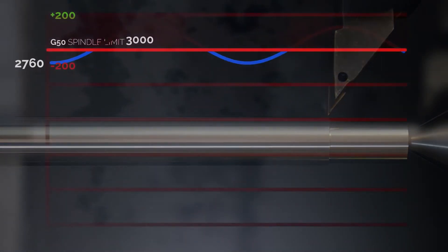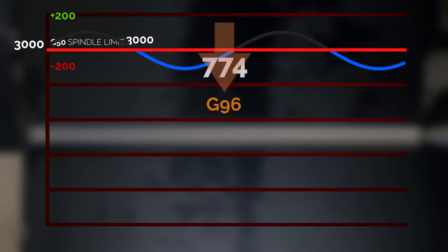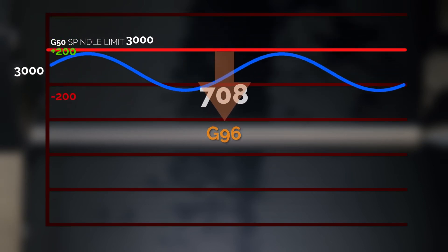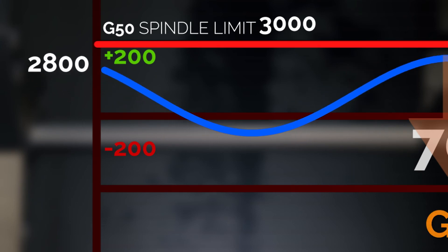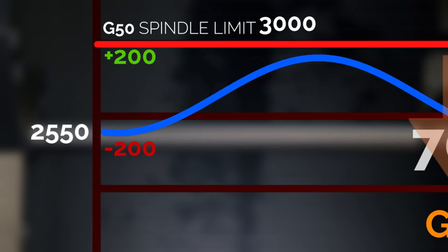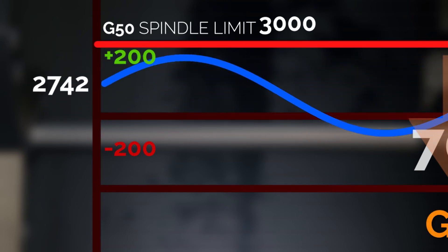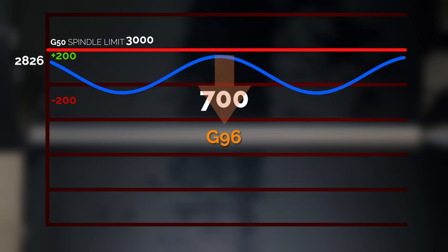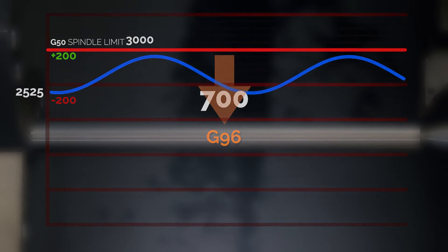On our chart, you can see the G96 range drops down, and now our peak RPM with SSV is 2900 RPM. We're below our G50 limit, and SSV is working again through its entire range.